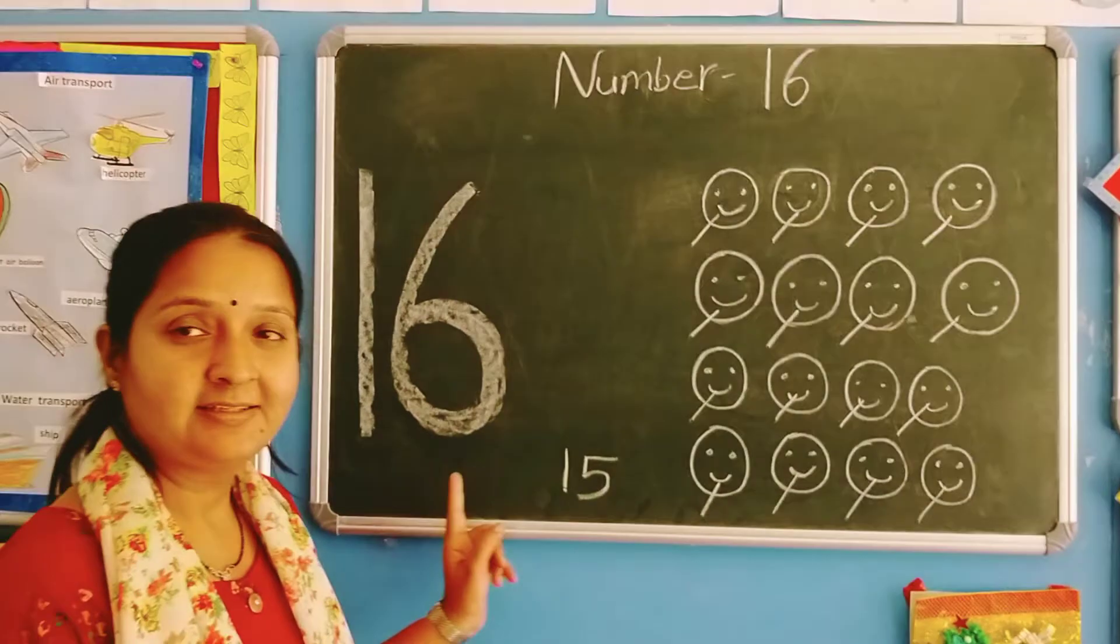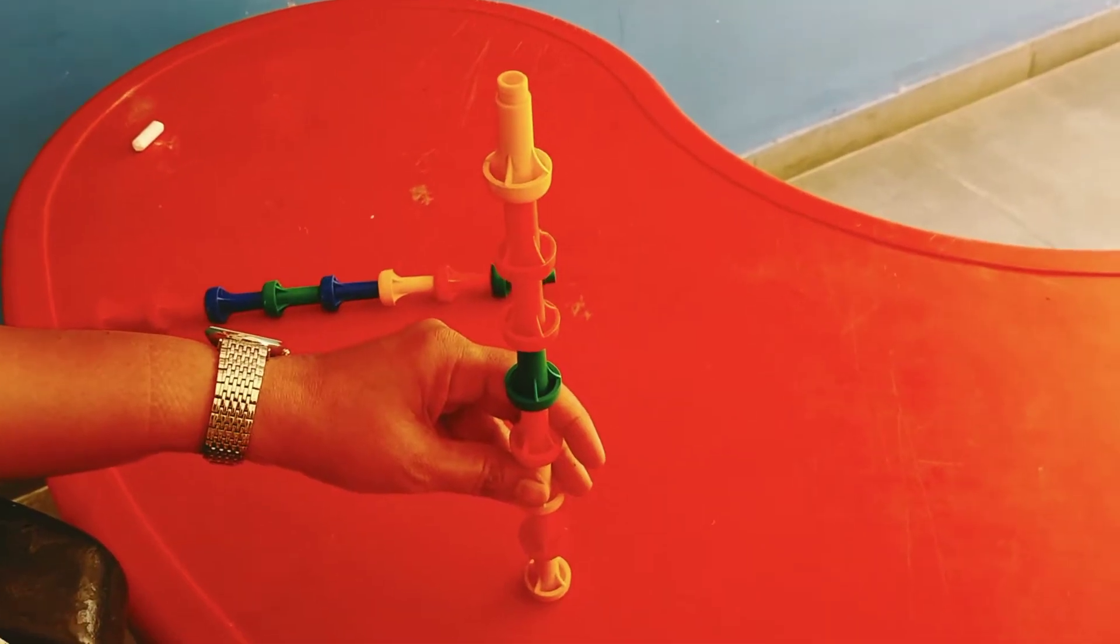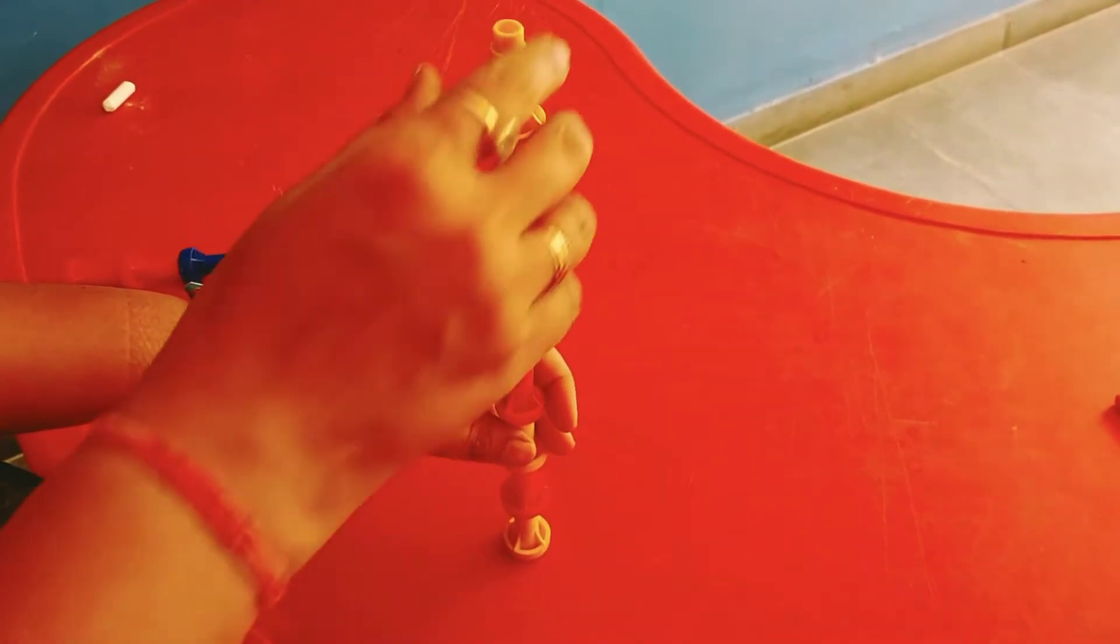Okay? 16 numbers, 16 smilies. Okay children? Now children, see? Yaha bhi meri paas kuch beads hai. Hum unko count karengi. Okay?